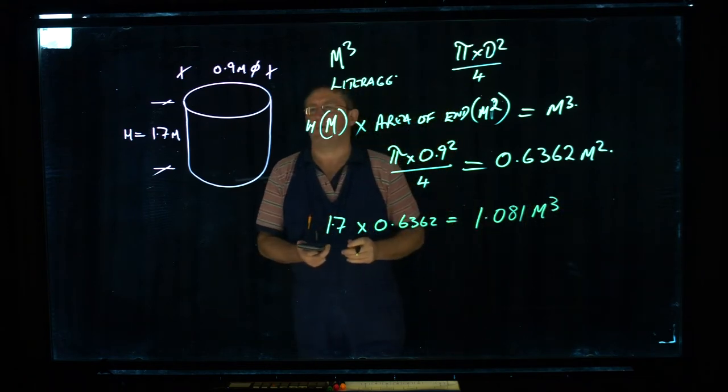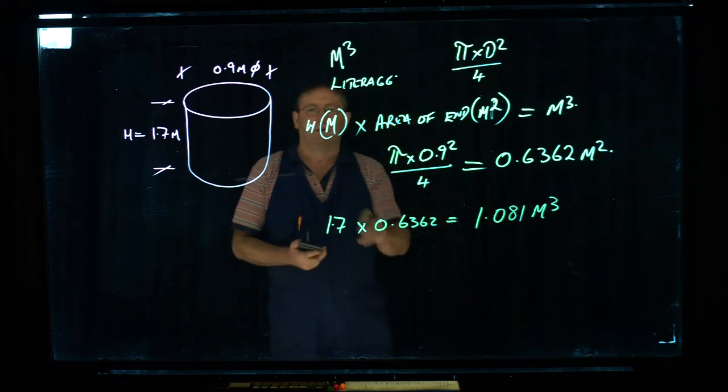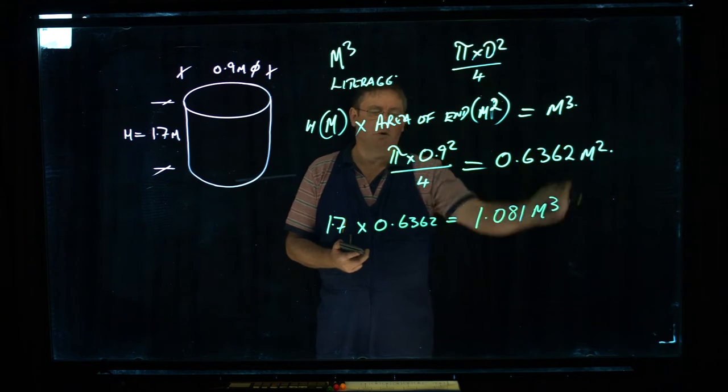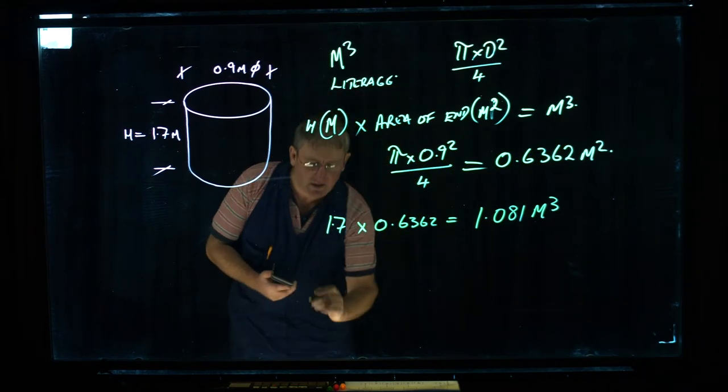So that's how we work out the cubic capacity of the tank. We times the height by the area of the end and that gives us metres cubed. So now that we've got metres cubed...